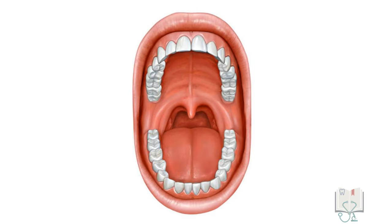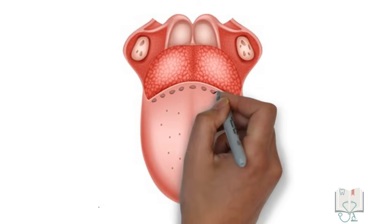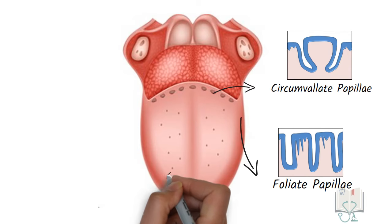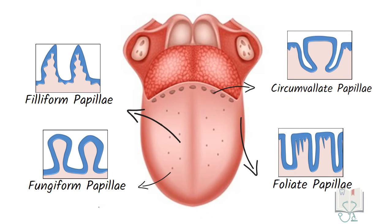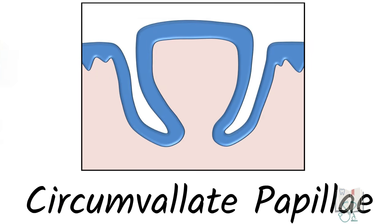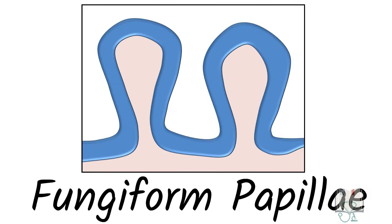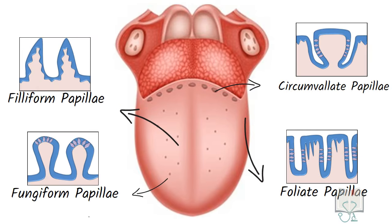In terms of location, in the oral cavity most of the taste buds are located on the dorsal surface of the tongue on various types of lingual papillae. In the circumvallate papillae, taste buds are located on the lateral walls. In the foliate papillae, they are located in the folds. In fungiform papillae, they are present on the dorsal surface. Though most numerous, the filiform papillae have no taste buds.